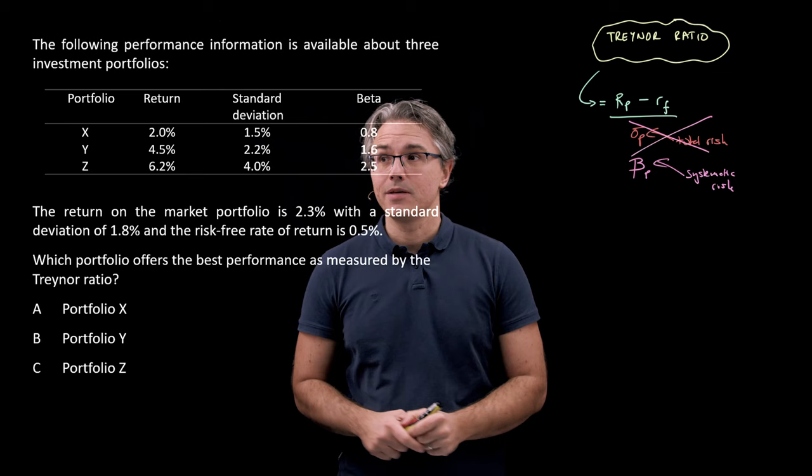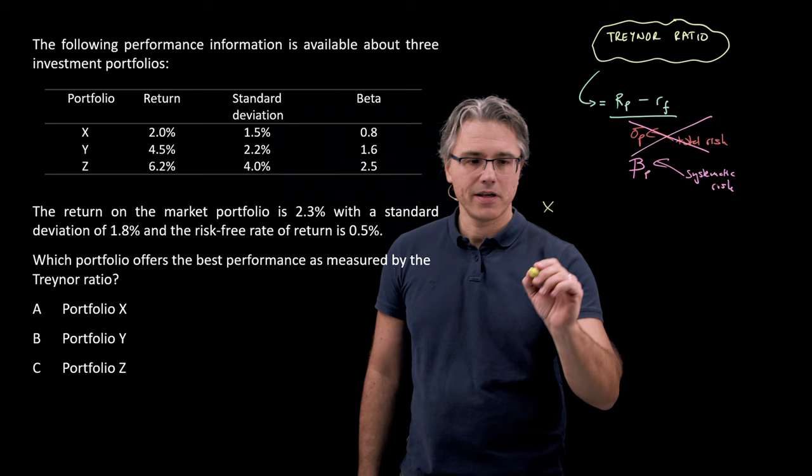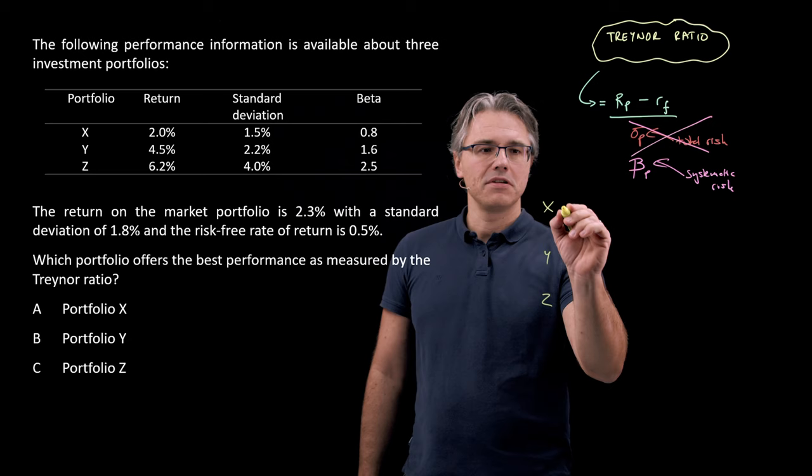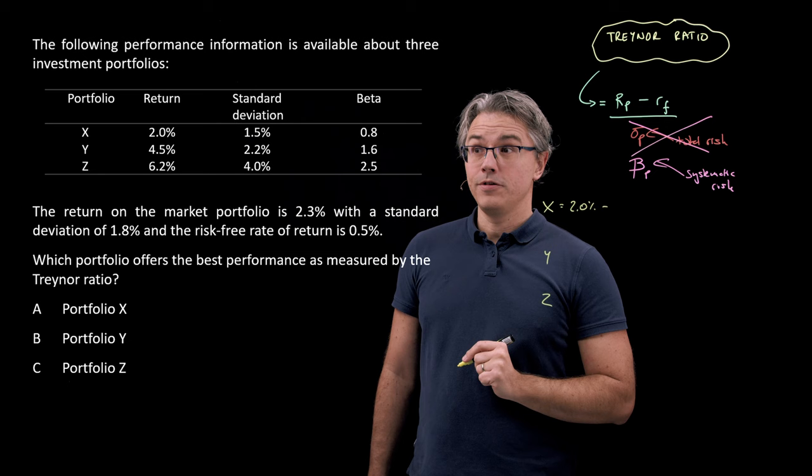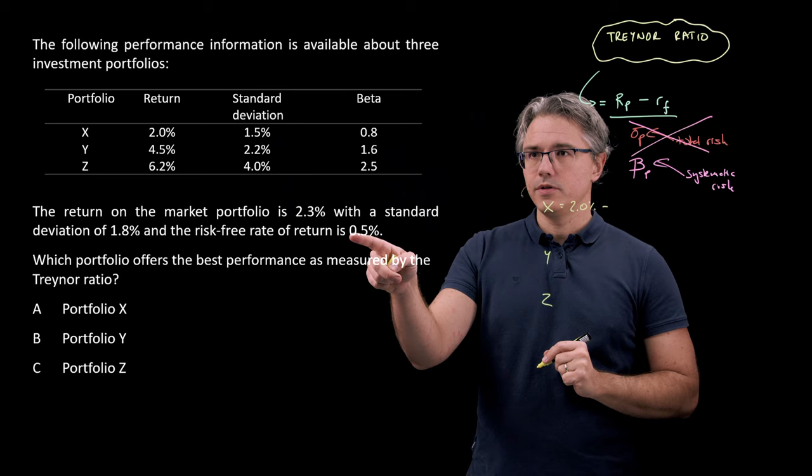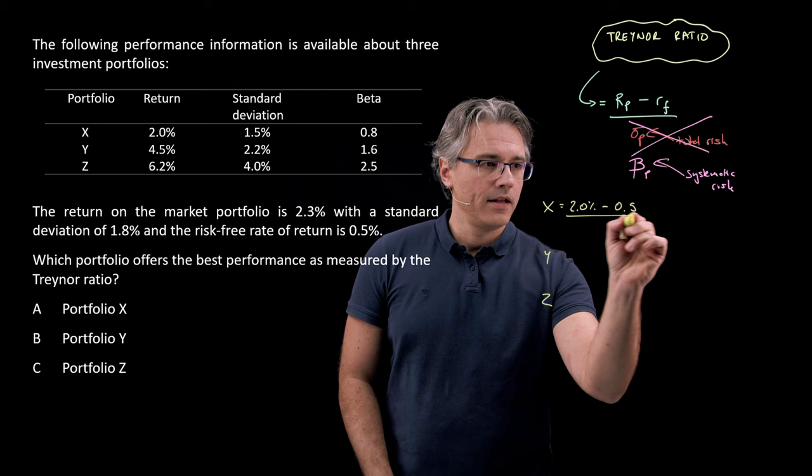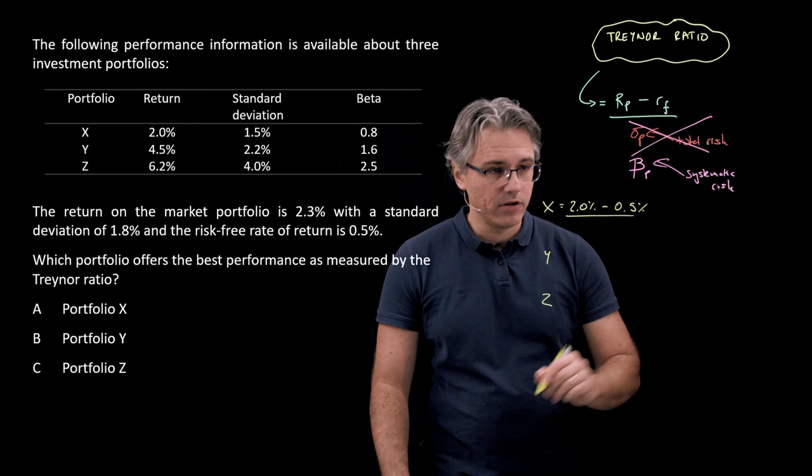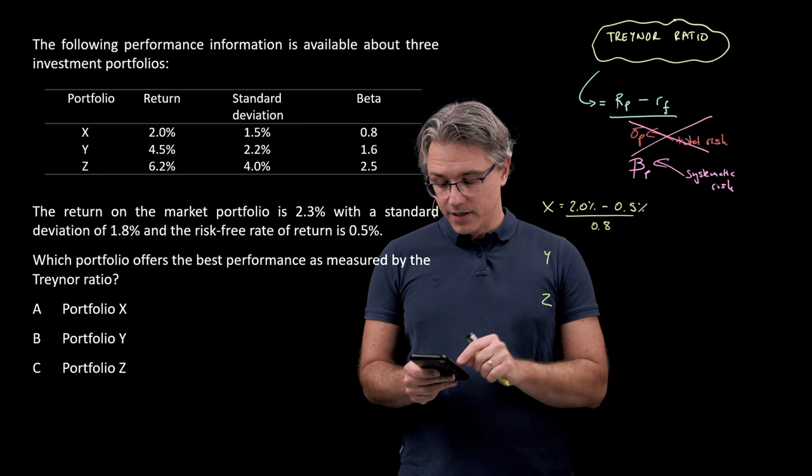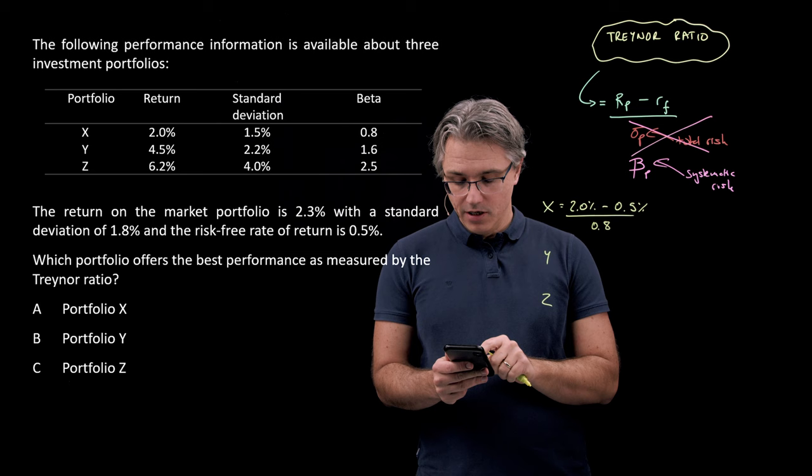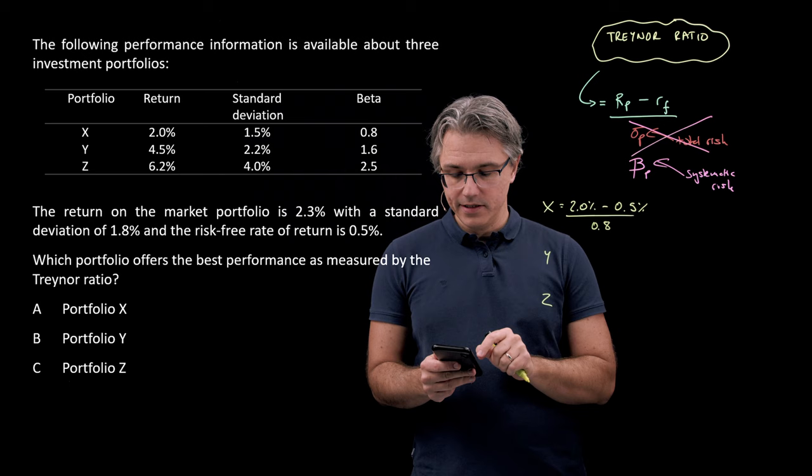So let's see what this will give for the three different portfolios X, Y, and Z. For X, we've got the return on it as 2%, and we deduct the return on the risk-free asset, which is 0.5%, so minus 0.5. And we divide by the beta, which for the first one was 0.8. Two minus 0.5, that's 1.5, divided by 0.8. For the first one, it's 1.875.